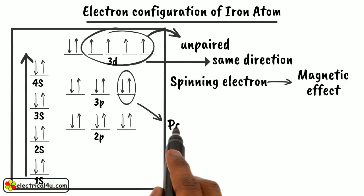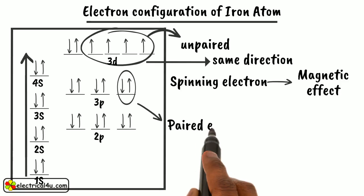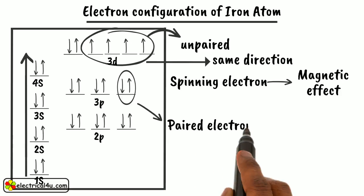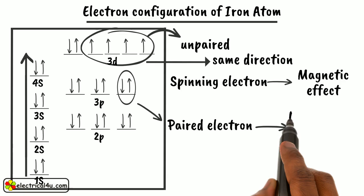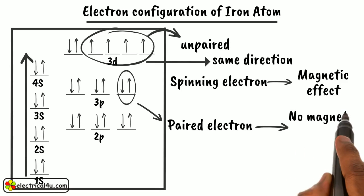But when the electrons are paired, one electron of the pair spins in opposite direction of the other. As a result, there is no resultant magnetic effect.